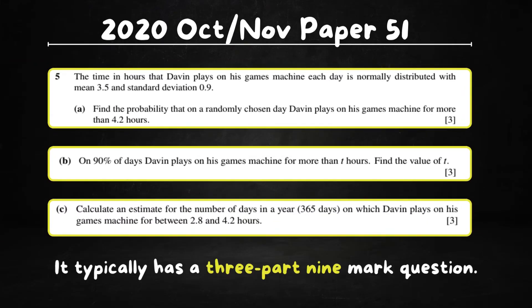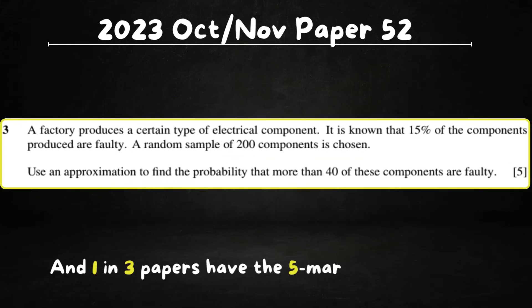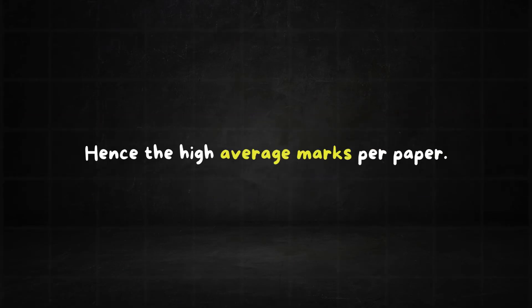On to the normal distribution. It typically has a 3.9 mark question. And one in three papers have the 5 mark approximation question. Hence the high average.